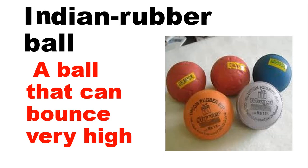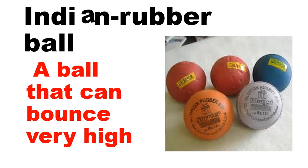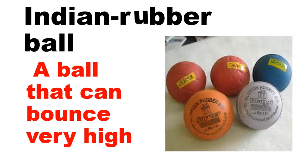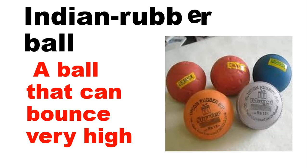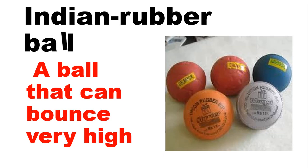I, N, D, I, A, N — Indian. R, U, double B, E, R — Rubber. B, A, double L — Ball. Indian rubber ball.